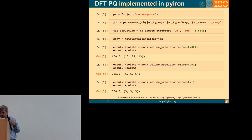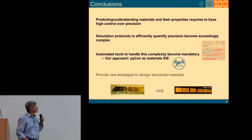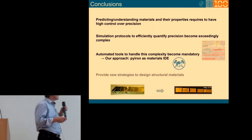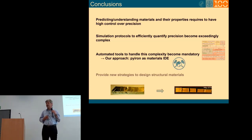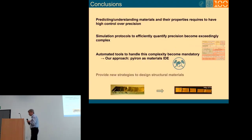So I think in order to really have control over precision, we need these types of automated tools which allow us in an automated fashion to quantify precision, and this allows us in the end to go to these types of designing materials. With this I'm at the end, I really like to thank the people who did all the work and you for your attention. Thank you.